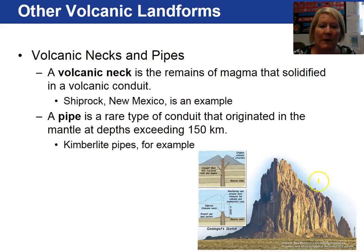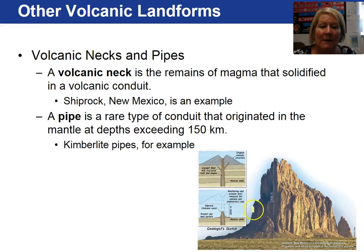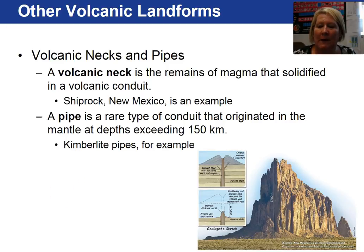Shiprock, New Mexico is an example of a landform called a volcanic neck. The external part of the volcano has been weathered and eroded away, and what exists at the Earth's surface is simply the inside of the volcano — the lava that had cooled inside. A volcanic pipe, related to kimberlite pipes where diamonds have erupted in the past, would be another volcanic landform.